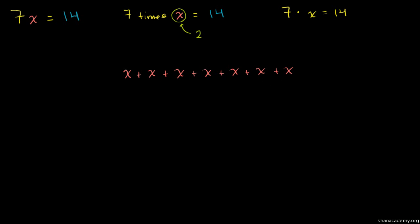Let me rewrite it down. This right here is 7x. Now, this equation tells us that 7x is equal to 14. So we're saying that this is equal to 14. Now let me just draw 14 objects here. So let's say I have 1, 2, 3, 4, 5, 6, 7, 8, 9, 10, 11, 12, 13, 14. So literally we're saying 7x is equal to 14 things. These are equivalent statements.